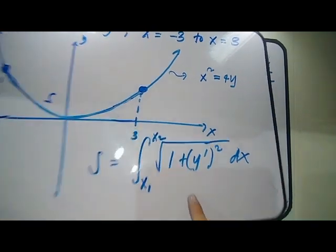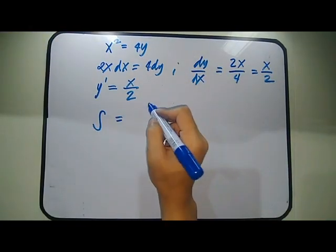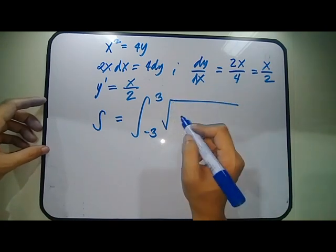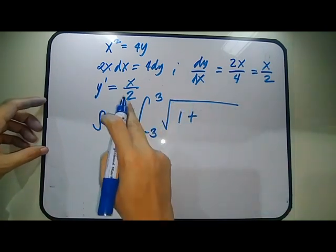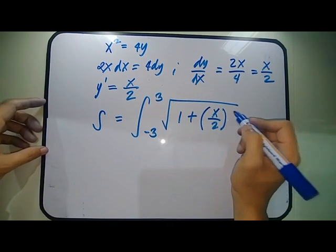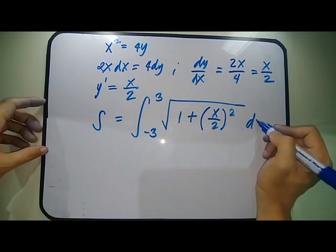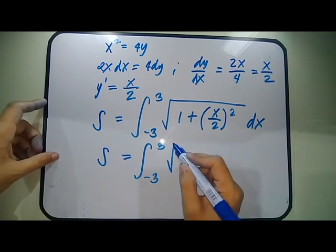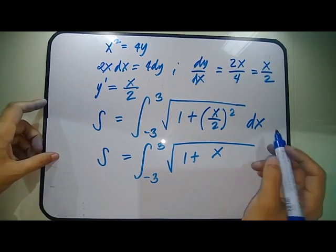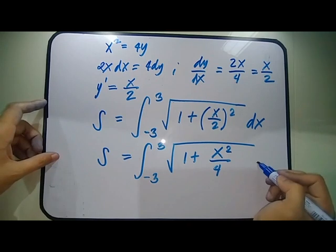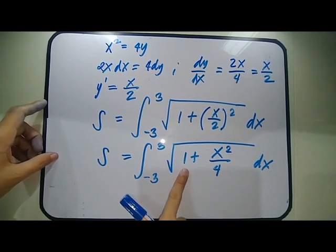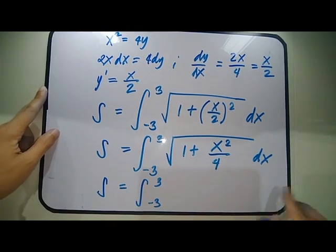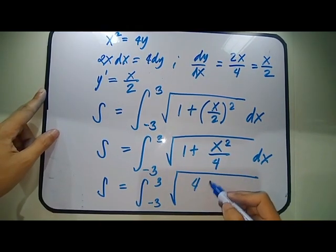Going back to our formula and substituting, the arc length S = ∫ from −3 to 3 of √(1 + (X/2)²) dX. Simplifying: S = ∫ from −3 to 3 of √(1 + X²/4) dX, which becomes S = ∫ from −3 to 3 of √((4 + X²)/4) dX. Bringing the 4 outside the square root gives a factor of 1/2.